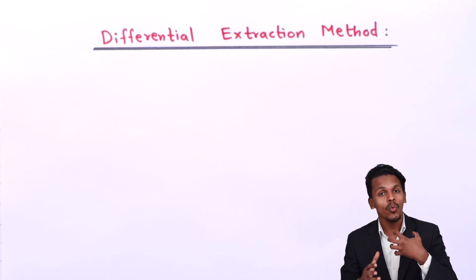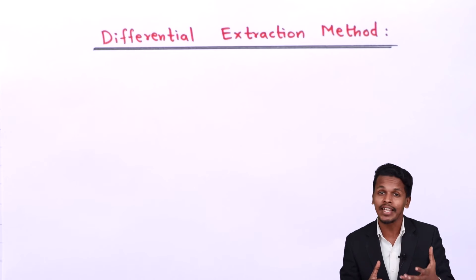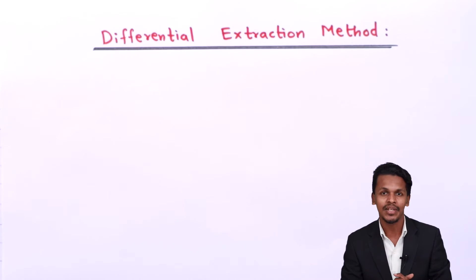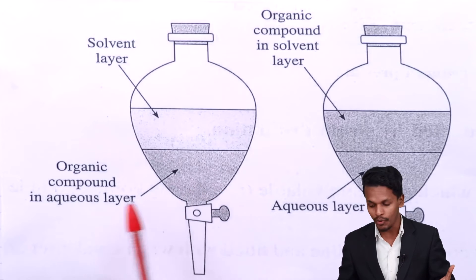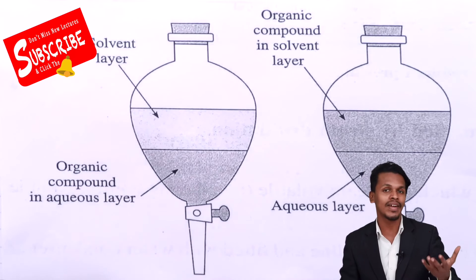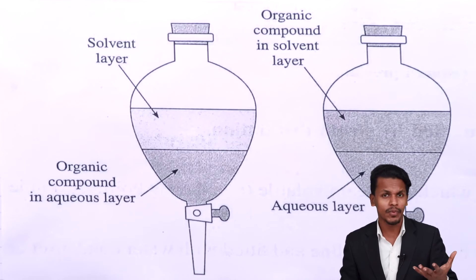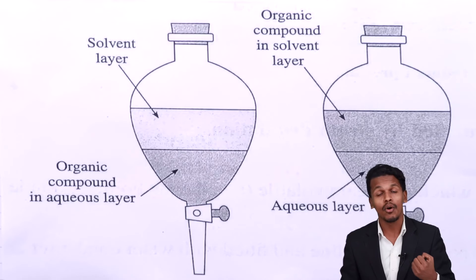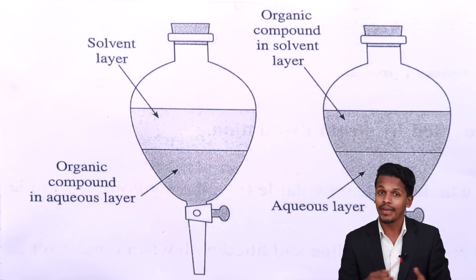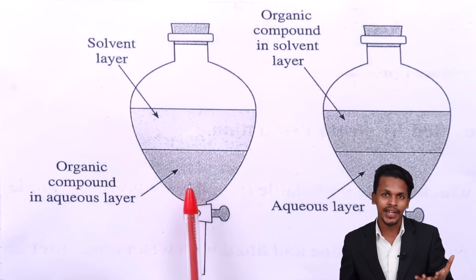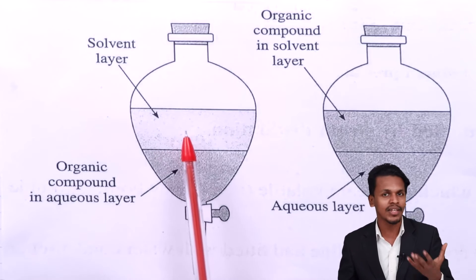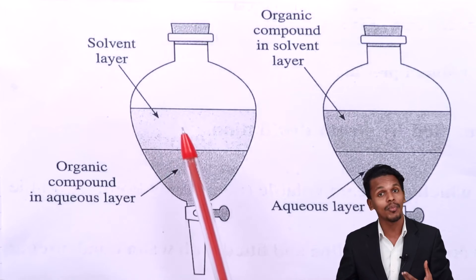This method is applied in industries to extract the organic compound from an aqueous solution, and I am going to represent this with the help of a diagram. This method consists of a separatory funnel, as you can see here. The lower layer is the aqueous solution in which the organic compound is dissolved, and the upper layer is the solvent layer — the organic solvent, which could be benzene or chloroform — added in a specific proportion. Since the organic solvent is not soluble with the aqueous solution, two distinct layers are formed.